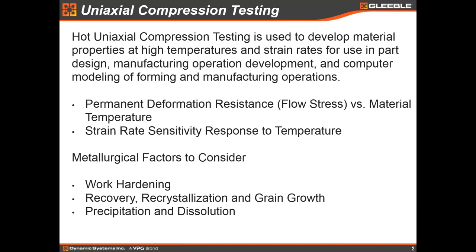There are a lot of other metallurgical factors to be considered: work hardening that may or may not occur depending on the temperature and the material, as well as recovery, recrystallization, and grain growth. Generally, uniaxial compression in a Gleeble is done in a hot working regime where you do have these dynamic metallurgical things going on — recovery of dislocations, recrystallization, and possibly even some grain growth, depending on the material, temperature, speed of deformation, et cetera.